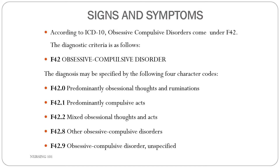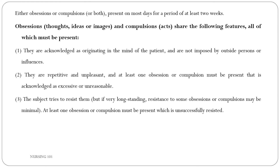Under F42, F42.1 is predominantly compulsive acts. F42.2 is the mixed obsessional thoughts and acts. F42.8 is other obsessive-compulsive disorder, and F42.9 is obsessive-compulsive disorder unspecified. To be diagnosed with OCD, either the obsessions or compulsions or both must be present for most of the days for a period of at least two weeks. Obsessions are thoughts, ideas, or images, and compulsions are acts.